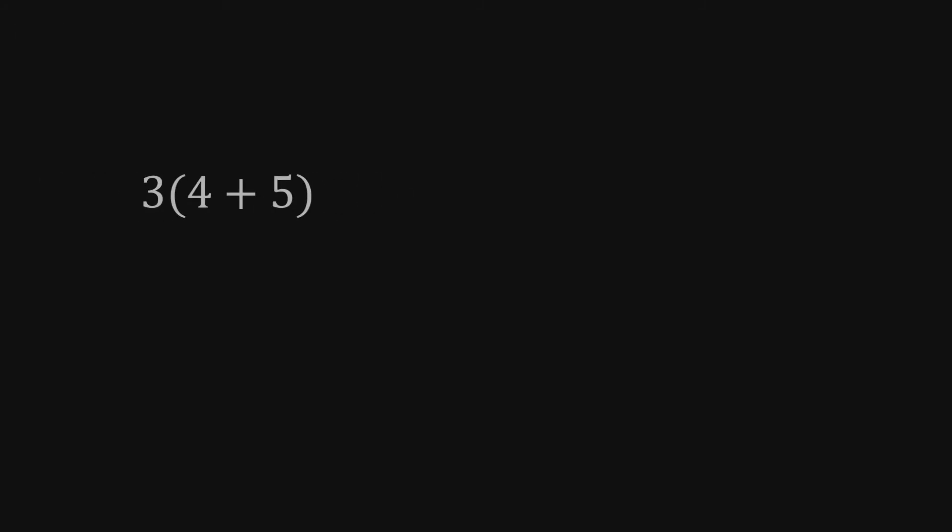A quick reminder of what this distributive property is all about. Consider 3 times the sum of 4 and 5. To evaluate this expression, we could simply add 4 and 5 to get 9, and then multiply the result by 3. That is, we really just have 3 groups of 9 here, which is 27.